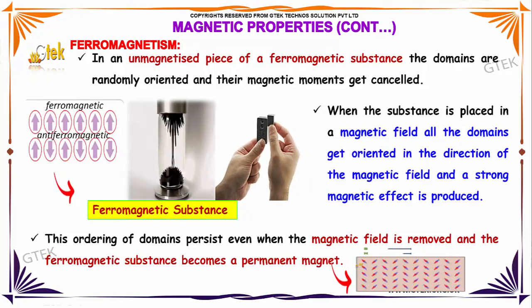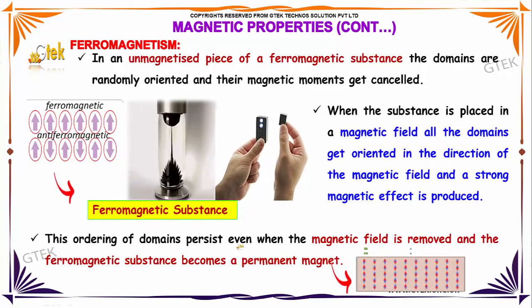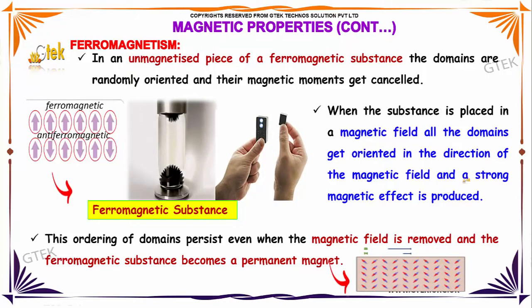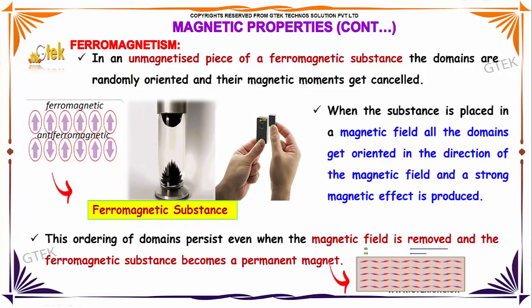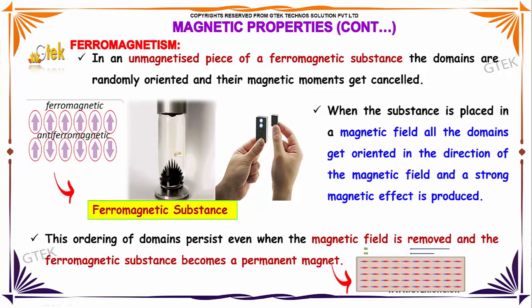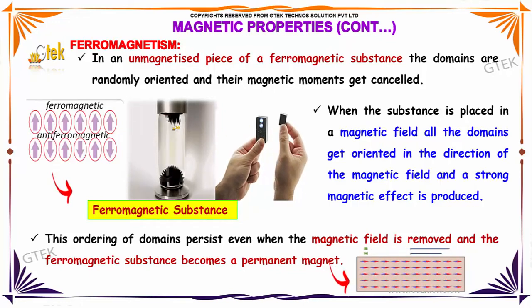The ordering of domains persists even when the magnetic field is removed, and the ferromagnetic substance becomes a permanent magnet.